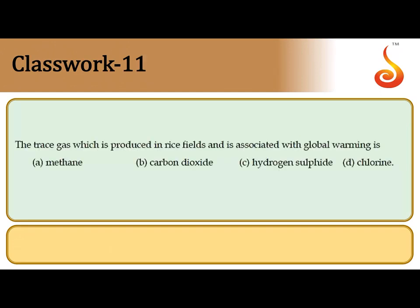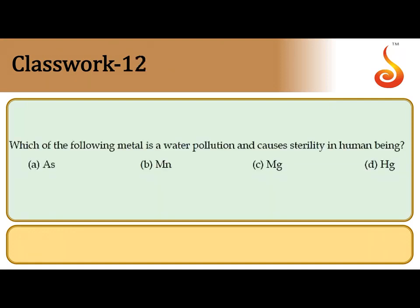The 11th question asks about the trace gas produced in rice fields associated with global warming. Rice fields have stagnant water, creating anaerobic conditions for soil biota and plant roots. Methanogens in the water generate methane gas, which is a significant contributor to the greenhouse effect and global warming — second only to CO₂. So rice fields involve production of methane, which is the trace gas involved in global warming. The correct answer is option A.